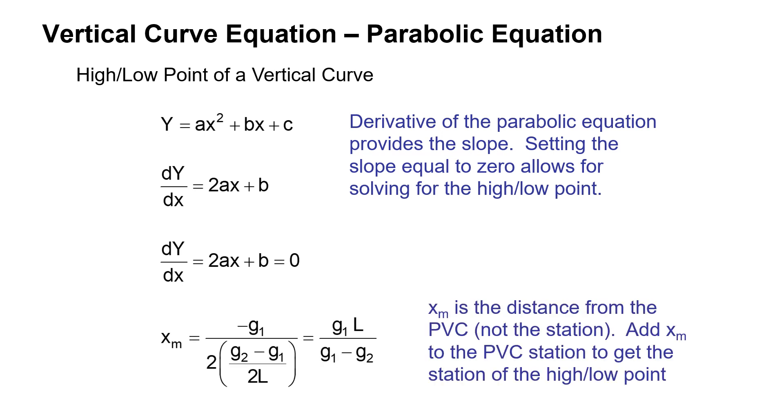Our equation x sub m is the distance from the PVC. It's not the overall stationing. We're going to have to add the x sub m to the PVC station to get the station of the high or low point. And that equation is G1 times L over G1 minus G2.